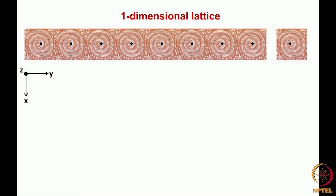When we look at periodicity in two or three dimensions, we have to use a coordinate system to represent the axes. The convention followed in crystallography is that from top to bottom is how the x-axis is defined, y-axis is from left to right, and z-axis is coming out of the screen. This is the convention used to represent the origin and the different axes.